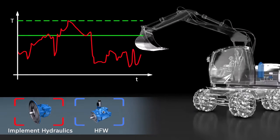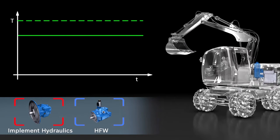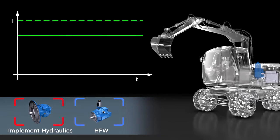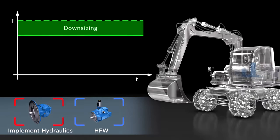Using an HFW system eliminates these performance peaks, so that a smaller rated torque is sufficient. This opens up the possibility of downsizing.